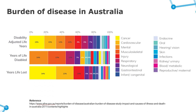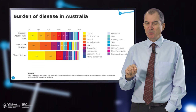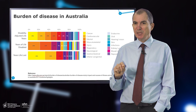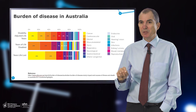If we look at burden of disease in Australia in terms of years of living with disability, the largest burden is mental disorders — primarily depression and anxiety. In fact, 25% of the years of living with disability due to burden of disease in Australia are related to depression. Yet it is treatable.